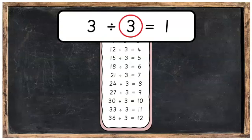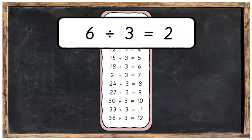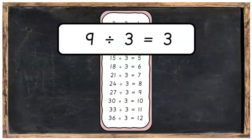To say our three division tables, we're going to start off by saying: three into three goes once. Then we've got three into six goes twice. Can you repeat that after me? Three into six goes twice. Next one: three into nine goes three times. Repeat after me.